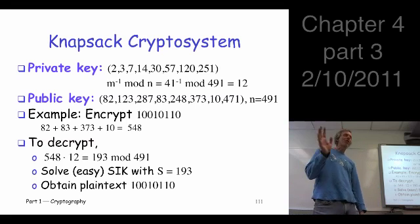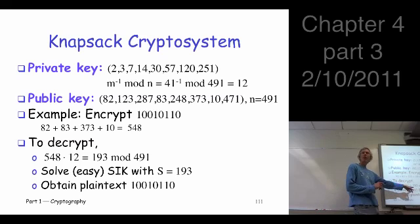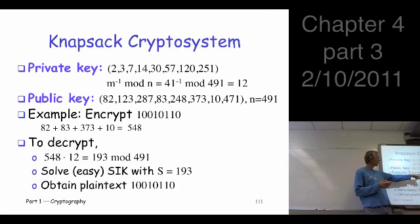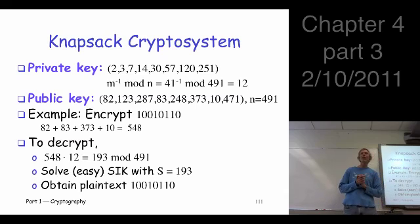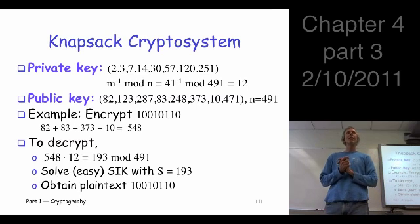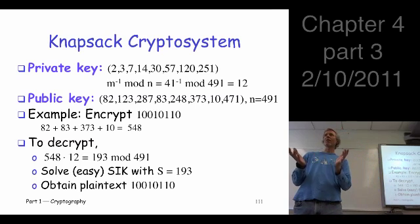But the point is this. So if we know the private key, we can decrypt. If we know the public key, we can encrypt. Now if you're Trudy, what do you get to know here? Public key. You know the public key. What else do you know? Ciphertext. So you have this ciphertext. You have this public key. You're trying to get plaintext. How would you do that?